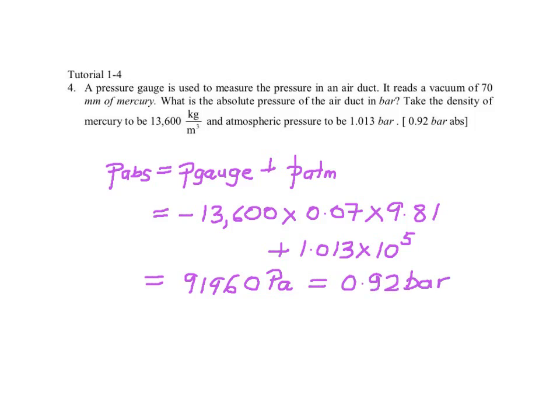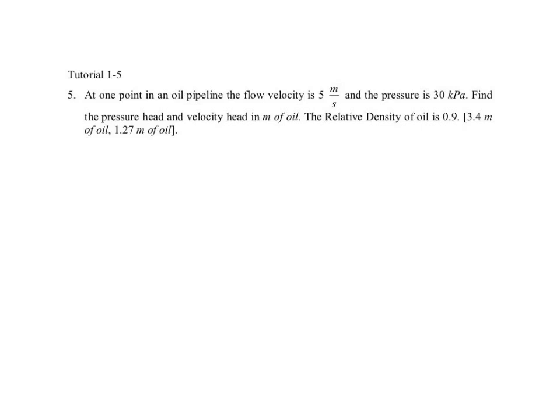That concludes this question. Now let's look at tutorial 1-5. Here, you are given at one point in an oil pipeline. The flow velocity is 5 meters per second,